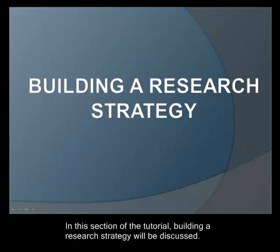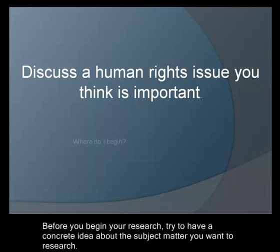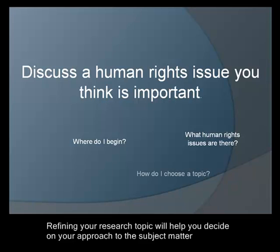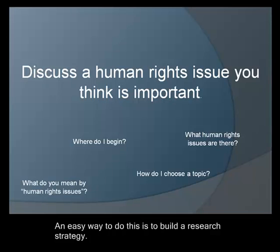In this section of the tutorial, building a research strategy will be discussed. Usually, research begins with a general topic or question of interest, such as discussing a human rights issue you think is important. Before you begin your research, try to have a concrete idea about the subject matter you want to research. Refining your research topic will help you decide on your approach and discover other ideas that may surround or affect it. An easy way to do this is to build a research strategy.